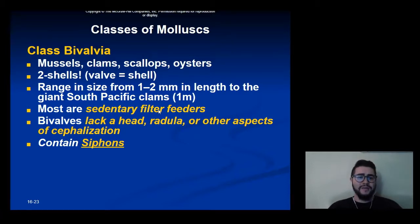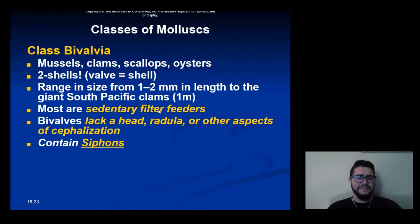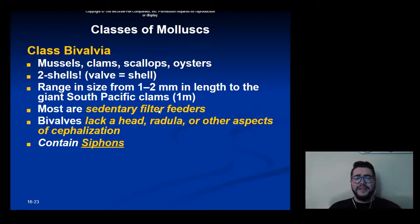The next class is Bivalvia — all the bivalves: mussels, clams, scallops, and oysters. Bivalves literally means two shells, so these are molluscs that have two shells instead of one. Size can vary significantly from one to two millimeters in length all the way up to a meter in length, like the giant South Pacific clams. Most are sedentary filter feeders and they generally lack a head region, a radula, or other aspects of cephalization.